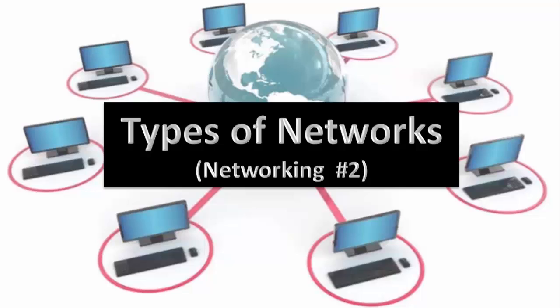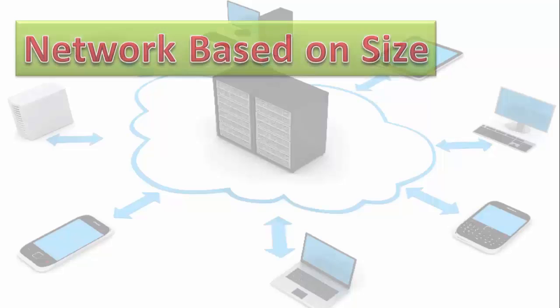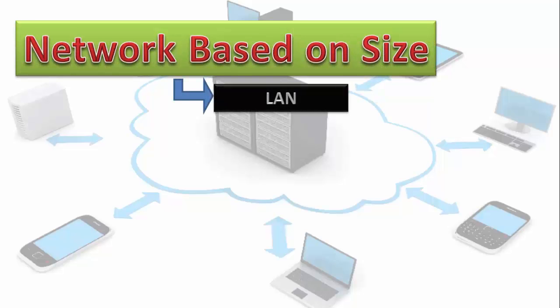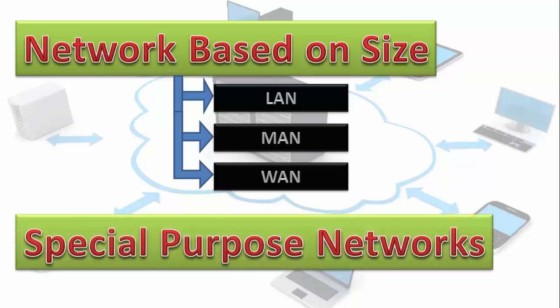Networks are categorized on the basis of their size, such as general purpose networks: LAN, MAN, and WAN. You probably have heard about them already. Some other types of networks are categorized on their purpose — those are called special purpose networks.